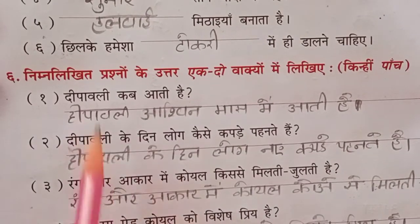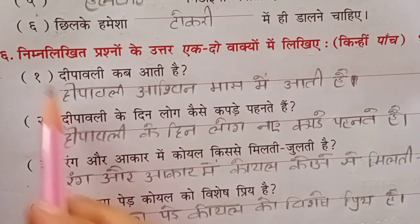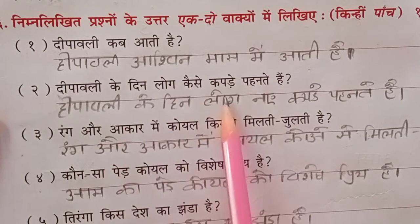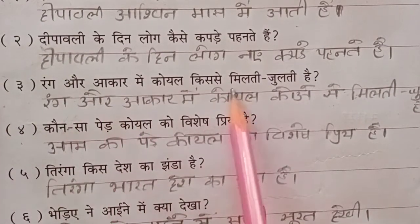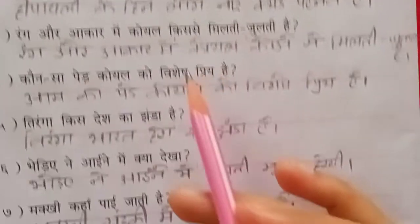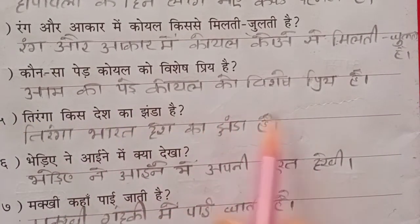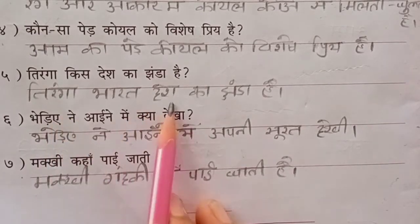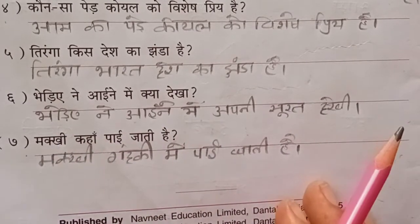Okay, uske baad prashn number 6 — neeche likhi praśnon ke uttar ek do vakyon mein likhiye. First: Diwali kab aati hai? Toh Diwali Ashwin maas mein aati hai. Second: Diwali ke din log kaise kapde pehnte hain? Fourth: Kaun sa ped koyal ko vishesh priya hai? Aam ka ped koyal ko vishesh priya hai. Fifth: Tiranga kis desh ka jhanda hai? Toh tiranga Bharat desh ka jhanda hai. Sixth: Pardiye ne aaine mein kya dekha? Toh pardiye ne aaine mein apni soorat dekhi.